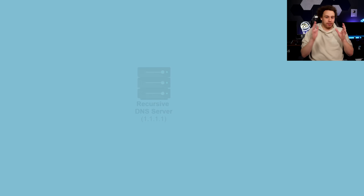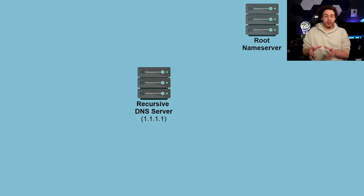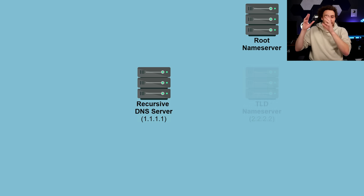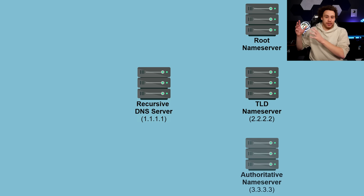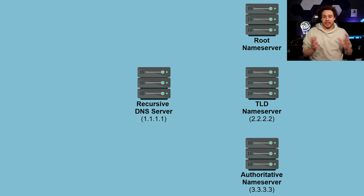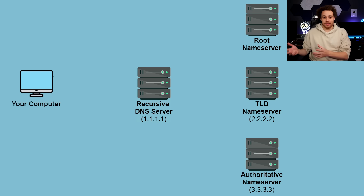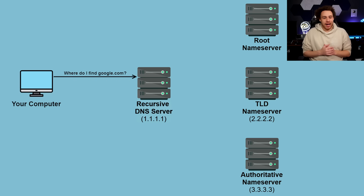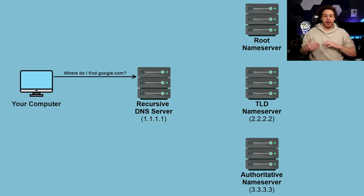The DNS process typically involves four servers: a recursive DNS resolver, the root name server, the TLD name server, and the authoritative name server. The first step in the chain is I send a query to my ISP's DNS server saying 'hey, where is google.com?' And my ISP's DNS server doesn't know the answer, but it has a list of hard-coded root name servers.